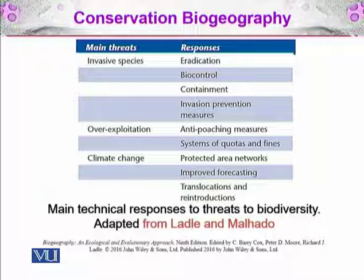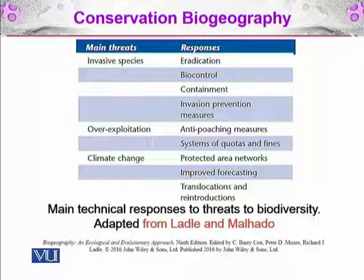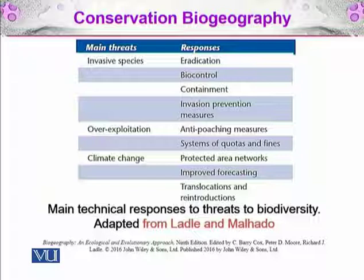If there is over-exploitation of resources, then we will implement anti-poaching measures. That means for hunters or poachers targeting animals, we will make laws against them and implement a system of quotas and fines to reduce over-exploitation. For climate change, the responses include protected area networks, improved forecasting, and translocation and reintroduction of species.